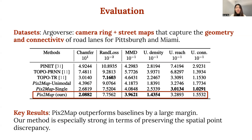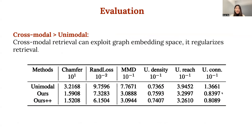For evaluation, we use the Argoverse dataset, which provides seven ring camera images with 360-degree coverage, and the maps capture the geometry and connectivity of road lanes for both Pittsburgh and Miami. We train Pixel Map with a single front view to ensure consistent comparisons to baselines, and even in this setting our method outperforms baselines by a large margin. Our cross-modal retrieval significantly outperforms classical unimodal retrieval — for example, nearest neighbor on image encoder features — as it can exploit the graph embedding space, which appears to regularize retrieval results, while the unimodal approach does not utilize any graph embeddings.